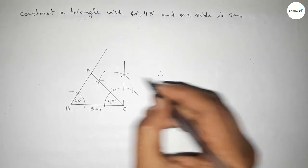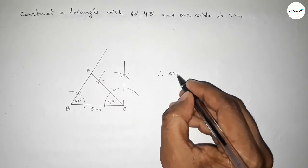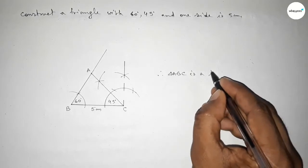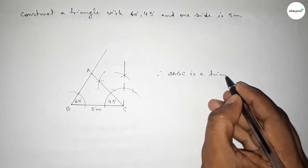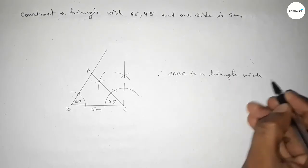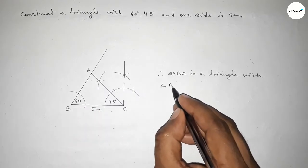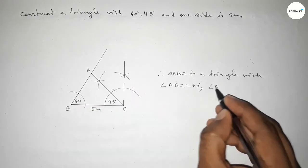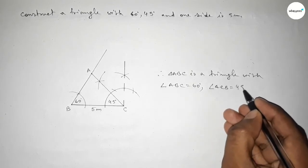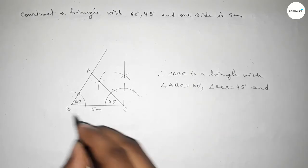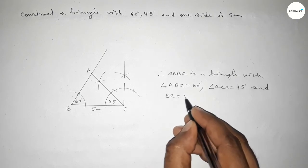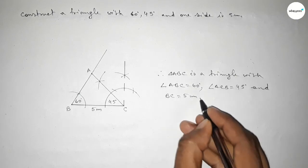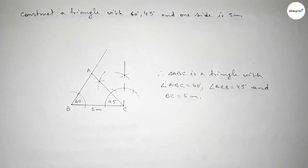So this side is 5 centimeters, this angle is 60 degrees, and this angle is 45 degrees. Therefore triangle ABC is constructed with angle ABC equal to 60 degrees, angle ACB equal to 45 degrees, and side BC equal to 5 centimeters. That's all — thanks for watching. If this video is helpful to you, please share it.